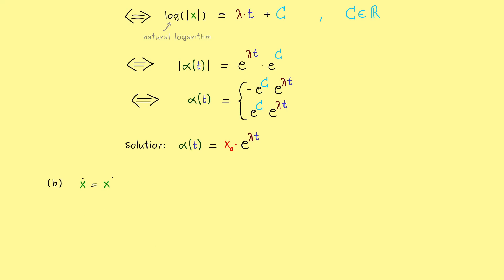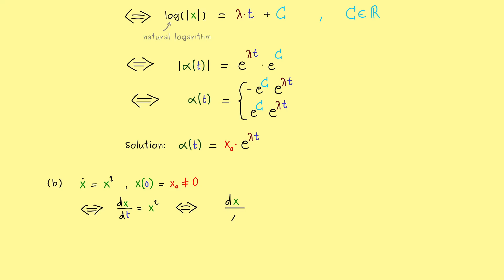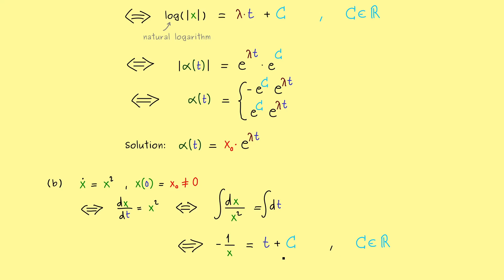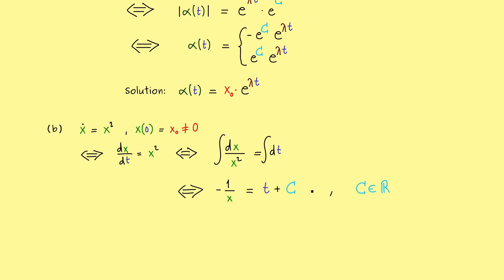Now let's look at another example: x dot equals x squared, with the initial condition x0 not equal to 0. We apply the same separation steps as before. On the left we have dx divided by x squared, and on the right just dt. Writing integral signs on both sides, the antiderivative on the left hand side is minus 1 divided by x, and on the right it is just t. The general form of the solution is obtained — please don't forget to add the constant, which is needed to actually satisfy the initial value problem and find the general form rather than just one particular solution.